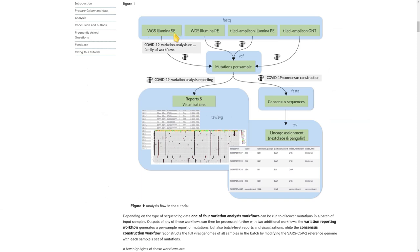The workflows at the core of this analysis: one of these four workflows goes from raw sequence reads to mutations called per sample. Because we're following along with the suggested example data, the workflow we're going to use is the one for Tiled Amplicon Illumina Paired-end sequencing data. It will result in a collection of VCF datasets that holds those mutations per sample in the batch.